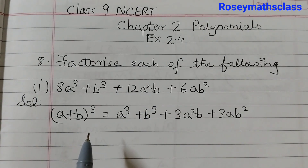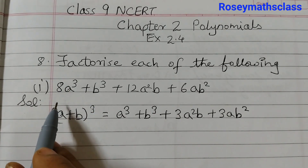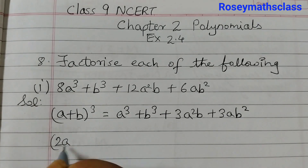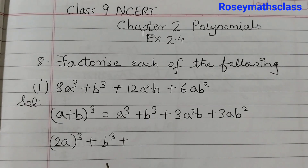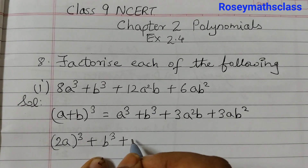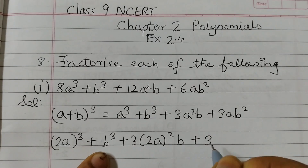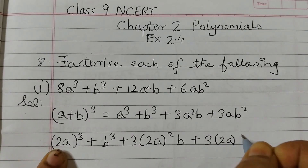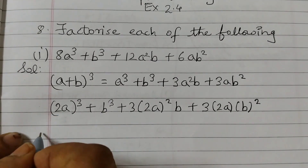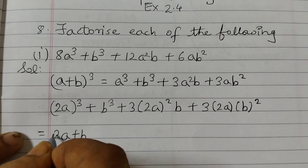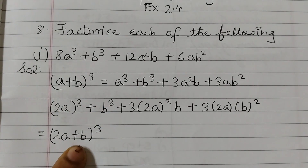First we write 8a cubed as (2a)³ since 8 = 2×2×2, plus b³, then fill in 3·(2a)²·b plus 3·(2a)·b². Once we identify a = 2a and b = b, we write the result as (2a + b)³.